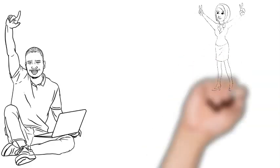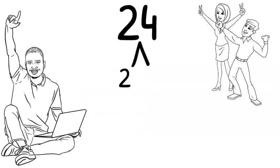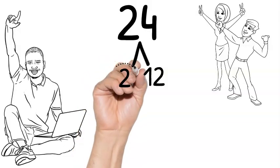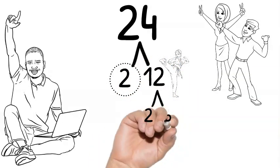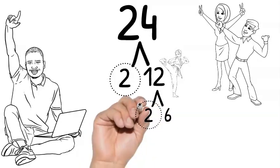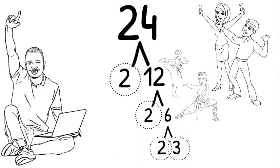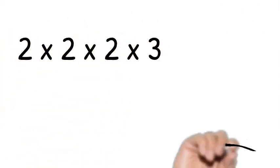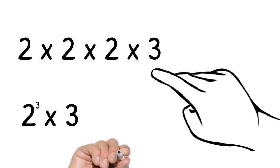Let's try one more — a harder one. Let's go with twenty-four. What times what gives you twenty-four? Let's go two times twelve. Is two prime? Yes — circle me baby! Is twelve prime? No, break it down — two times six. Is two prime? Yes — circle me baby! Is six prime? No — break it down to two times three. Circle both! So we get two times two times two times three, or two to the third power times three, which equals twenty-four. That's prime factorization!